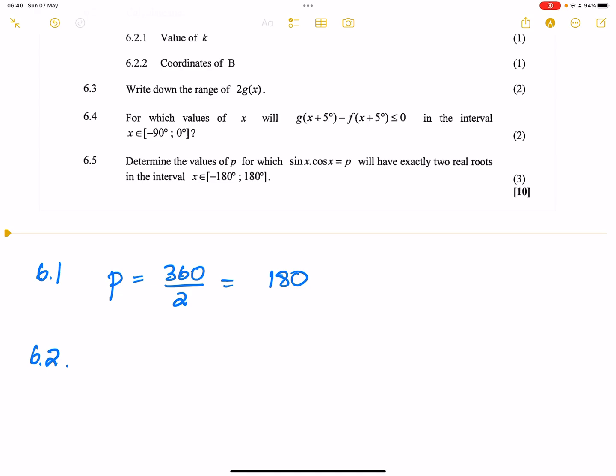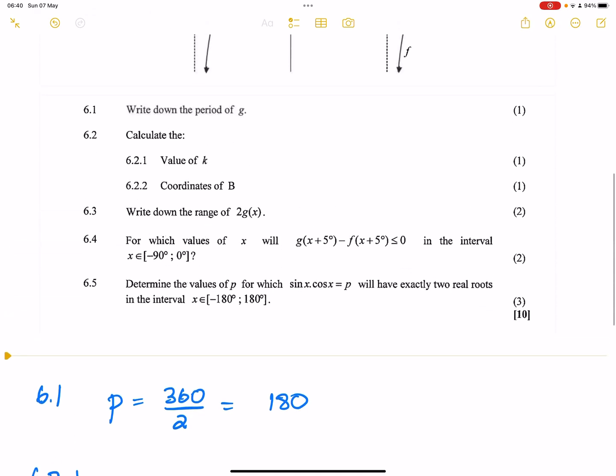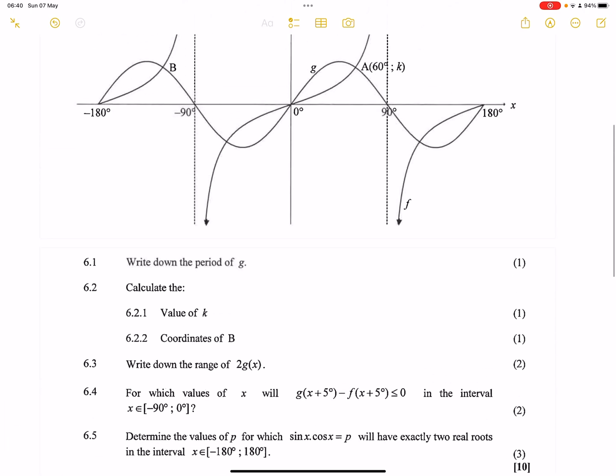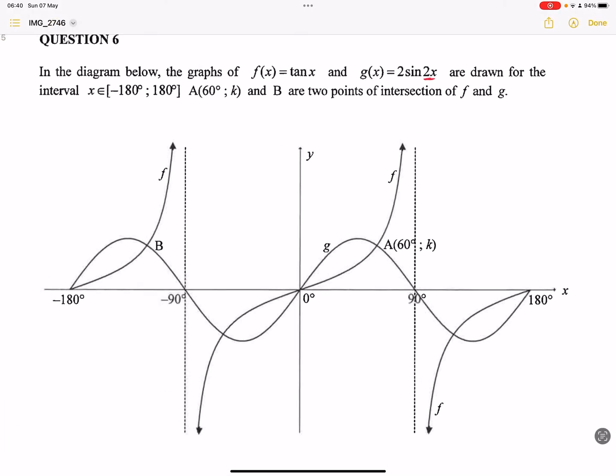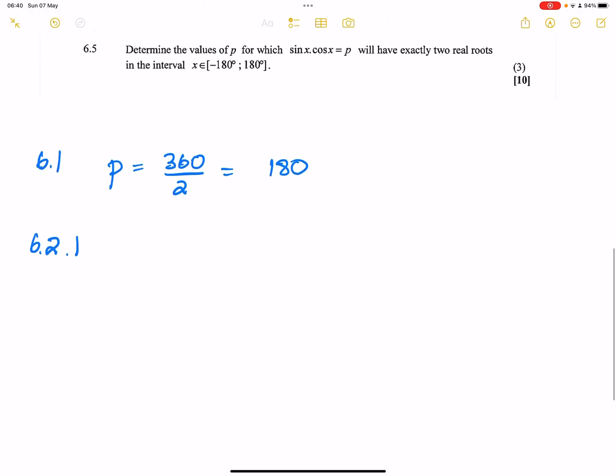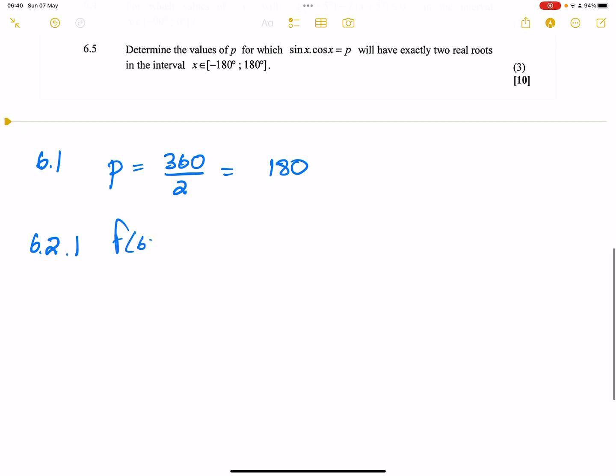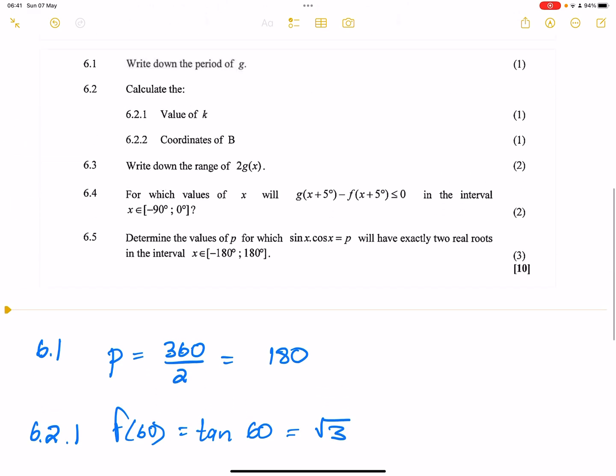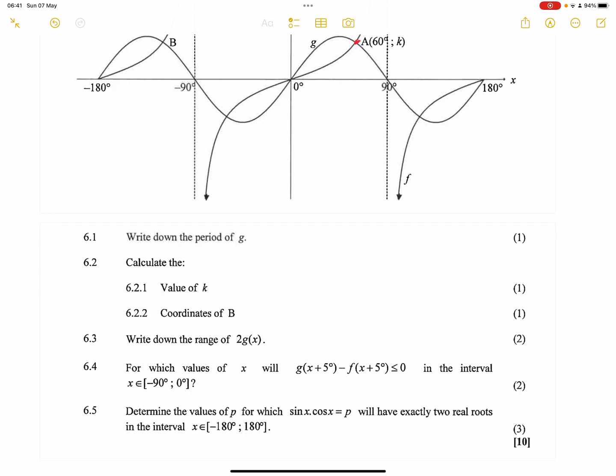So 6.2.1, they say to us, calculate the values of k. Now note that k is the point where both graphs are actually 60 degrees. So you can actually substitute 60 on either graph. So I am going to actually say f(60), which is tan of 60. And you'll notice that once you put tan of 60, that will simply give us a root 3. Or you can use special angles as well.